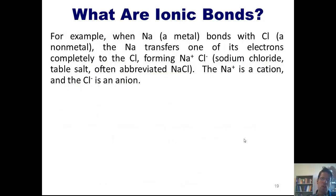For example, when sodium, Na, a metal, bonds with chlorine, a nonmetal, the sodium transfers one of its electrons completely to the chlorine, which forms an Na plus and a Cl minus, which is also known as sodium chloride, table salt, and is often abbreviated as NaCl. The Na plus is a cation, and the Cl minus is an anion.